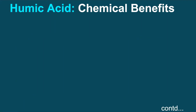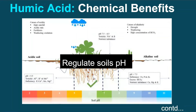Chemically, humic acids regulate the pH value of soils — that is, they neutralize both acidic and alkaline soils. In other words, application of humic acid can help address normal soil pH, providing favorable conditions for crop cultivation.